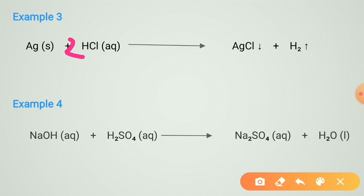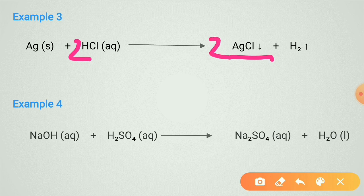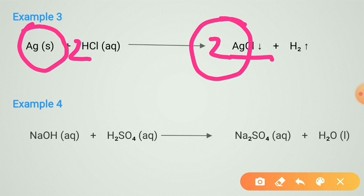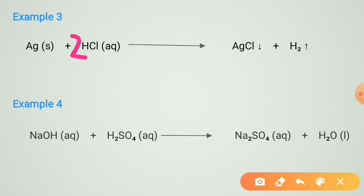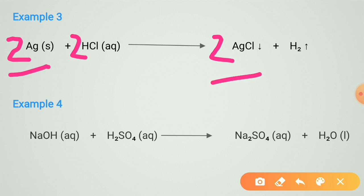Put two on the reactant side for hydrogen. Now chlorine atoms increase, so put two there as well. But now Ag is two on one side and one on the other, so put two for Ag too. Check: two atoms of silver on both sides, two atoms of hydrogen on both sides, two atoms of chlorine on both sides. The reaction is now balanced.